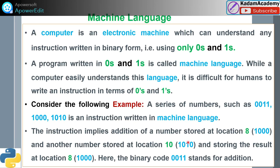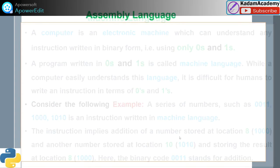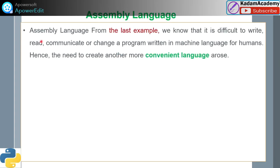Regarding assembly language: for machine language, we know it is difficult to write, read, and modify programs written in machine language for humans, because with so many zeros and ones, it is hard to know where the code starts and ends. It is not easy to change such a program.